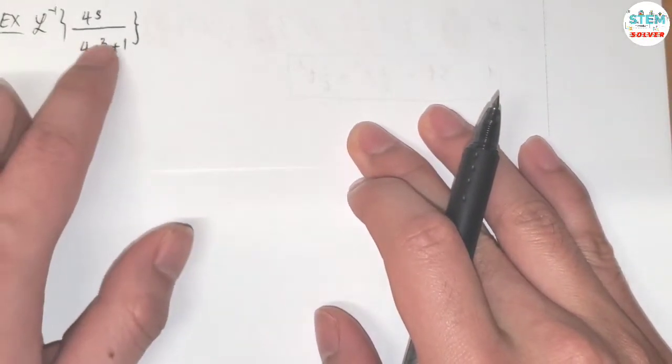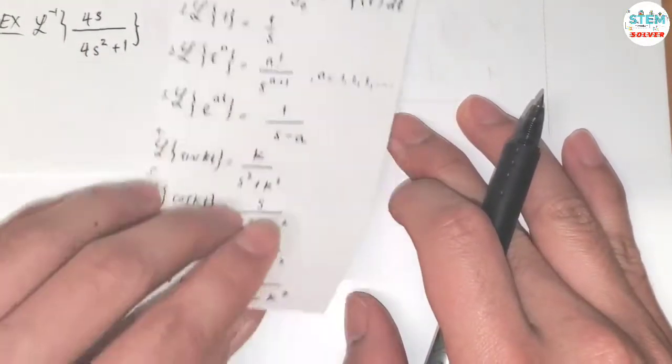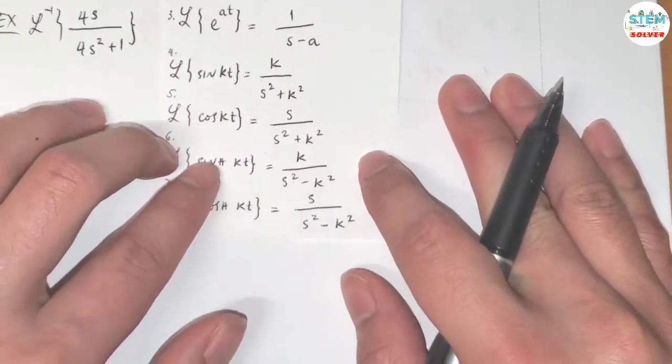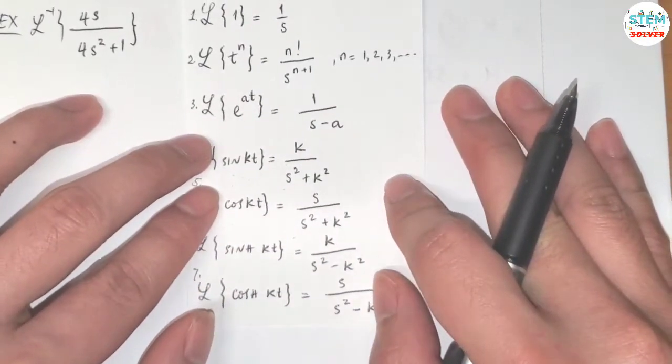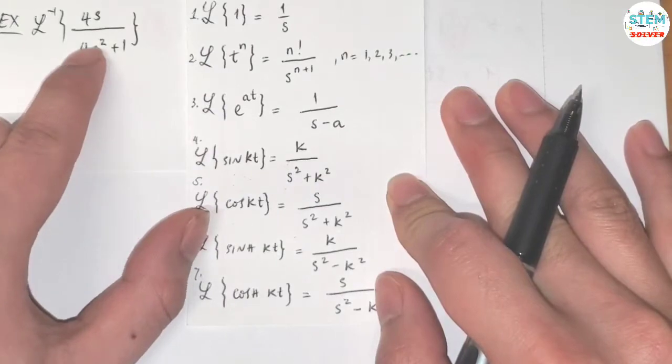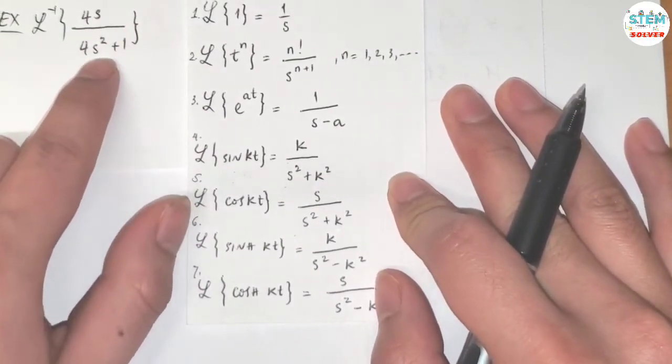Find the inverse transform of 4s over 4s squared plus 1. So by looking at the table here, we have s over s squared, we have s over s squared plus something.